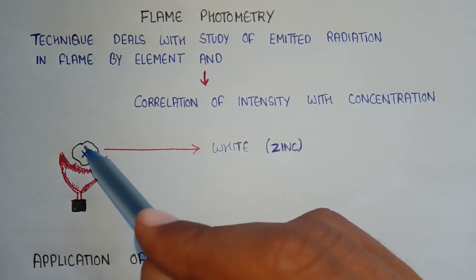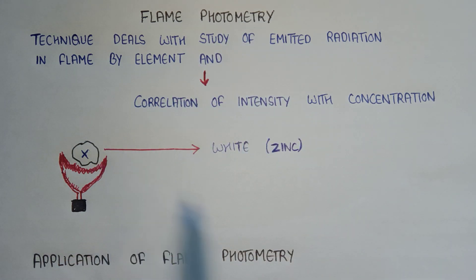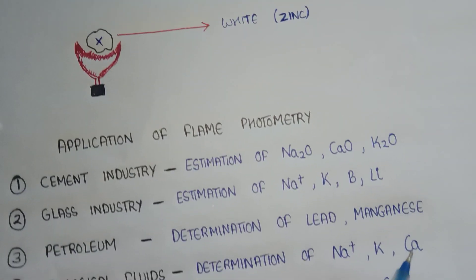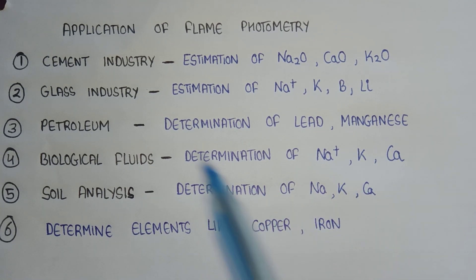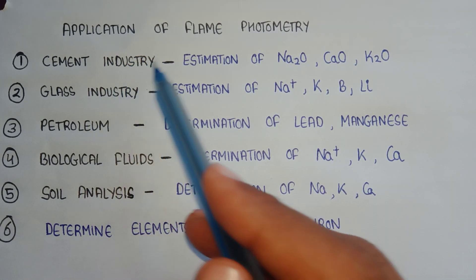So this is all about flame photometry. Now coming to the applications of flame photometry. Here are some applications. Flame photometry is used in cement industry for estimation of sodium oxide, calcium oxide, potassium oxide.